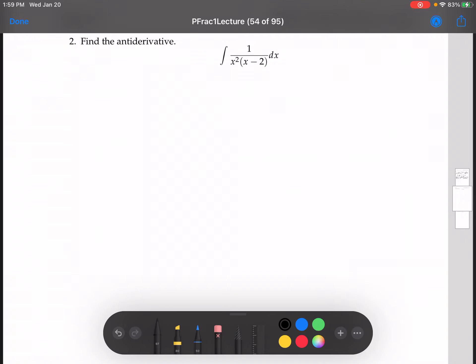All right, so more partial fraction decomposition. So again, we start with 1 over x squared times x minus 2.